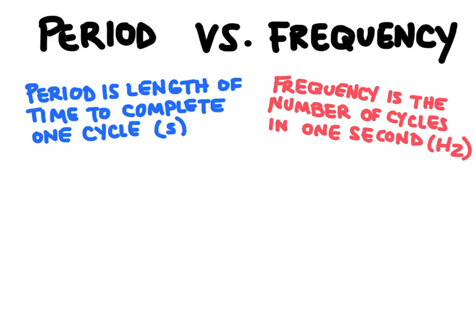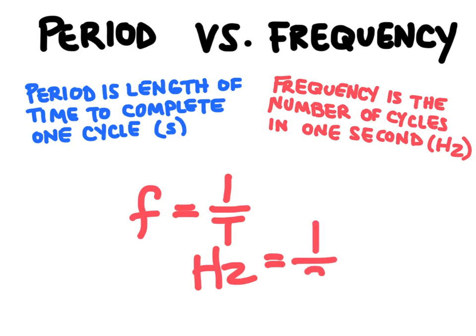Now, if we wanted to find the frequency, we can use an equation that looks like this. Frequency is equal to the inverse of the period, so we take one divided by the period. And this is where these units come from. Hertz actually stands for one over second, or sometimes you see it written as second to the minus one.